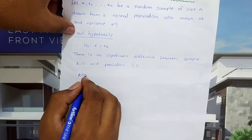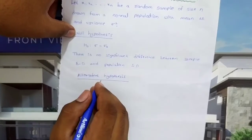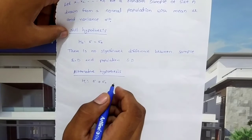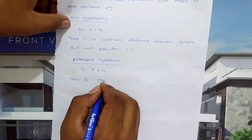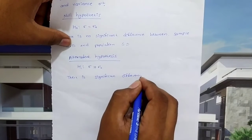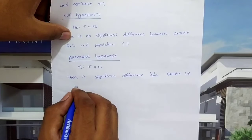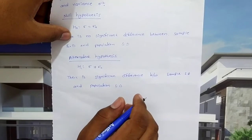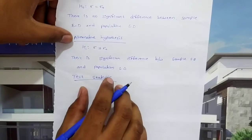Alternative hypothesis H1: sigma not equal to sigma0. There is a significant difference between sample standard deviation and population standard deviation. Next, test statistic.